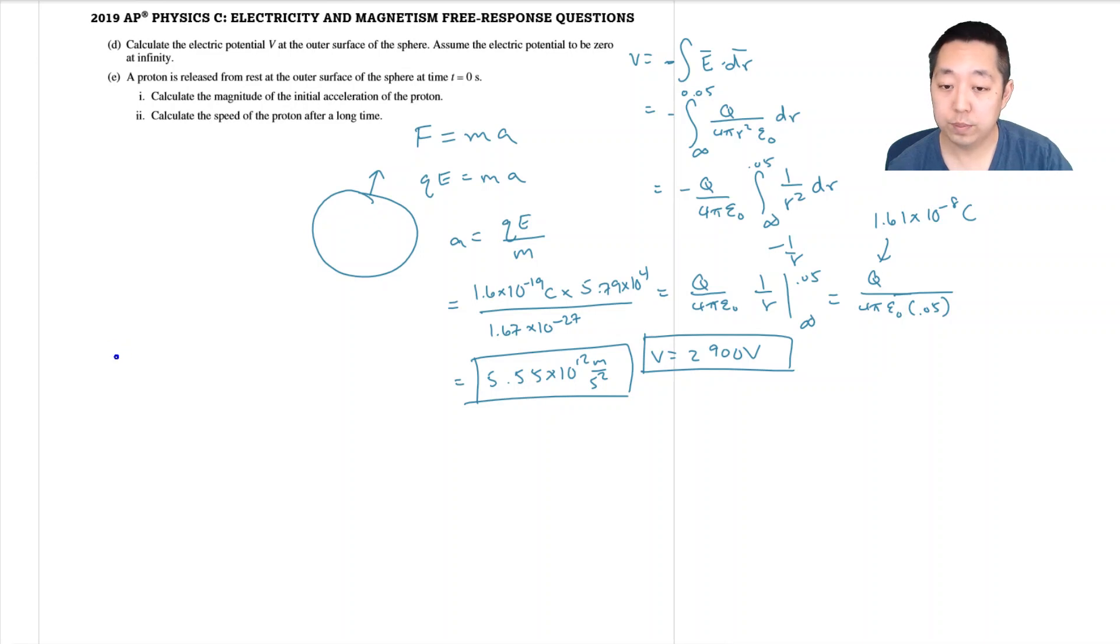Calculate the speed of the proton after a long time. So for this, it's sort of like energy. We would say that the work, like because I know the potential, like the Q delta V is the work that's going to be done by the electric field or all this charge on the system. So that's Q times the voltage we found, which is 2900. That has to go all into its energy, its kinetic energy. And so its velocity is 2Q times 2900 divided by M. And like usually I know these are constants for the proton, so. Oh, and I get the square root of this.